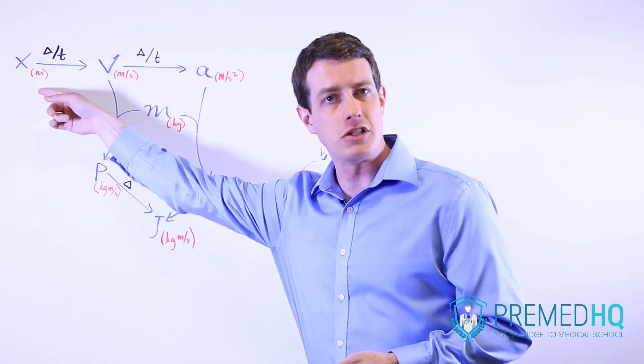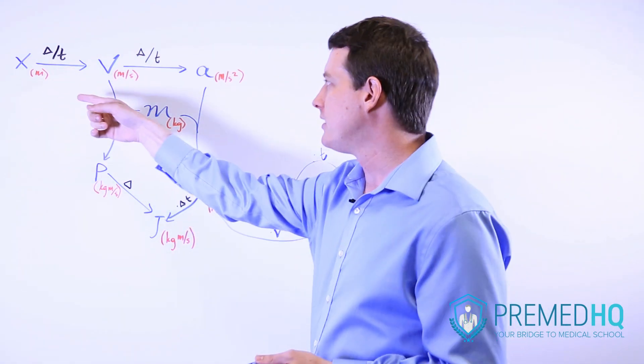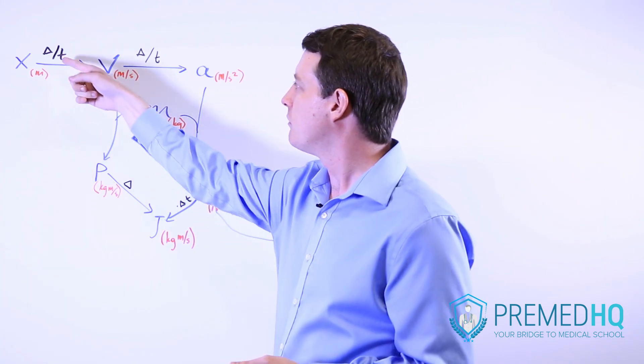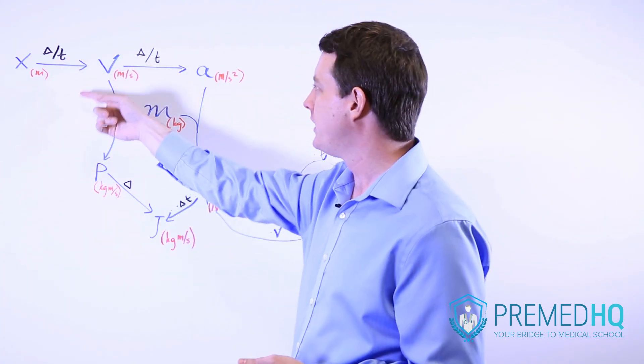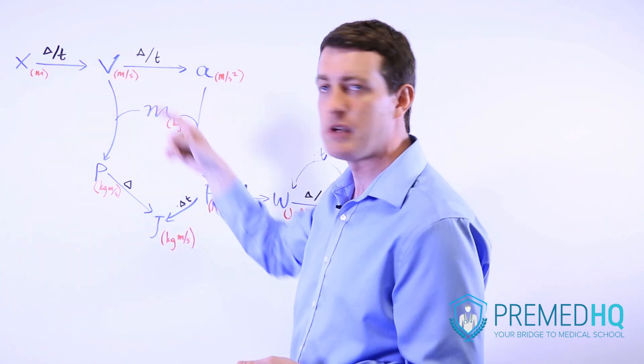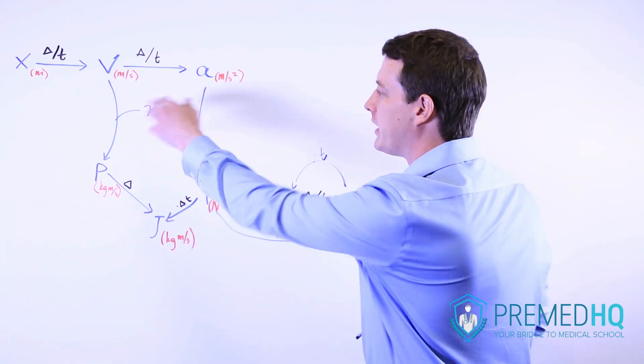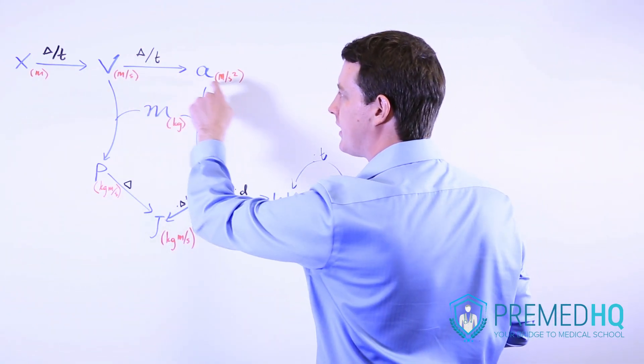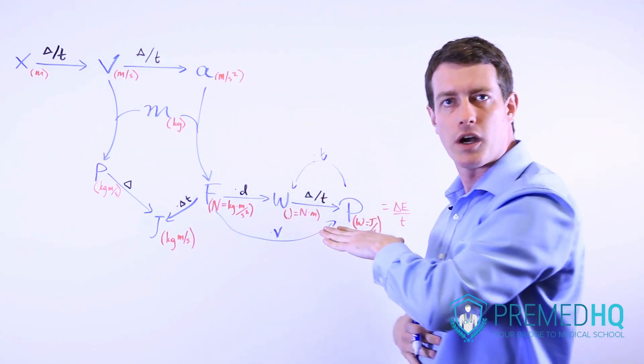So we start with position, which is usually listed in meters. And to get from position to velocity, we just divide by time. And that gives us the unit of velocity, which is meters per second. From there, we divide velocity by time and we get to acceleration, which is meters per second squared.